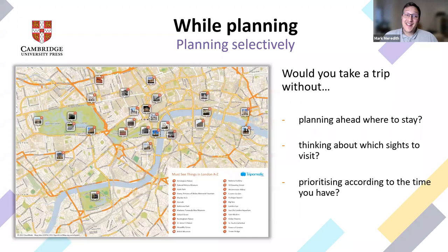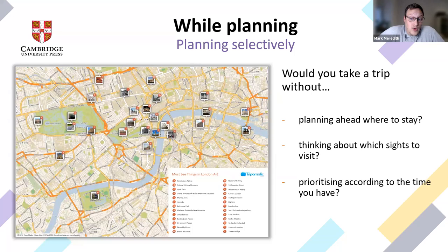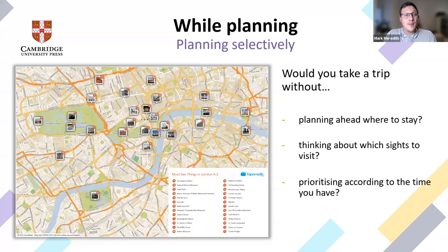Please forgive the cliché — but when we think about our lessons, would you travel somewhere without planning ahead where to stay? Would you just go and visit random sites, or would you prioritize your time accordingly? When thinking about planning with competencies, it's really valuable to take the time to plan ahead, think about which sites you're going to stop at, and how much time you have to deal with them in class.